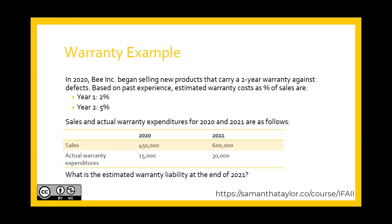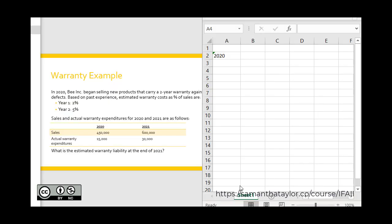Let's look at an example. In 2020, Bee Inc. began selling new products that carry a two-year warranty against defects. Based on past experience, estimated warranty costs as a percentage of sales are: Year 1 — 2%, Year 2 — 5%. Sales and actual warranty expenditures for 2020 and 2021 are provided. We are to estimate the warranty liability at the end of 2021. The key to this example is remembering there's a two-year warranty for sales in 2020 and for sales in 2021.